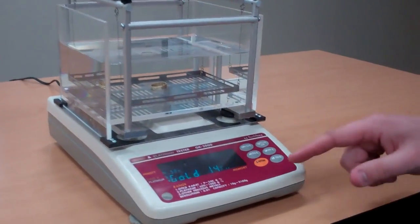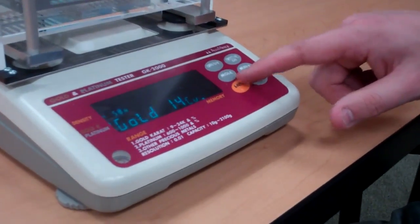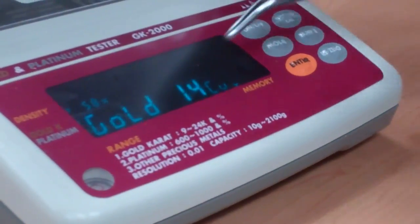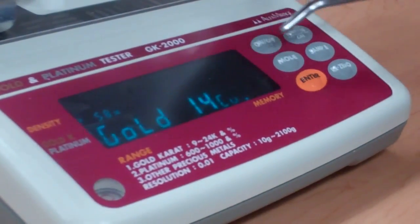And there's three modes. You can switch it by hitting the mode button. Gold K is for gold testing mode.